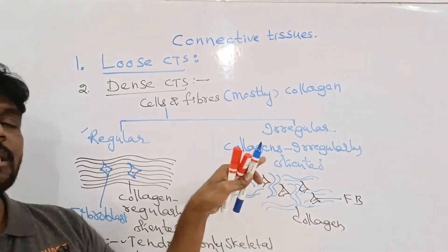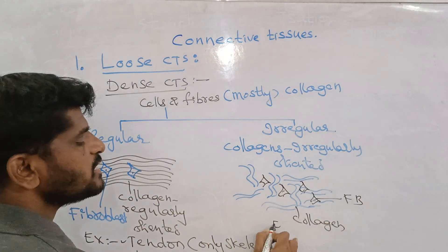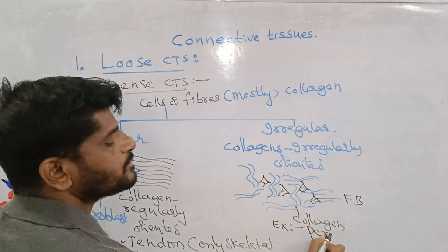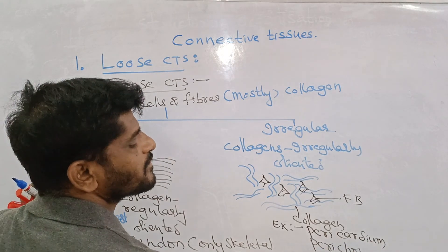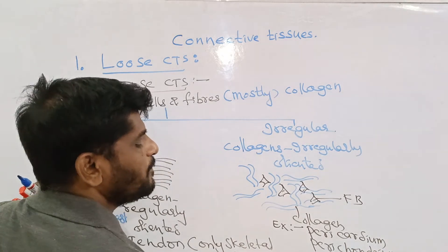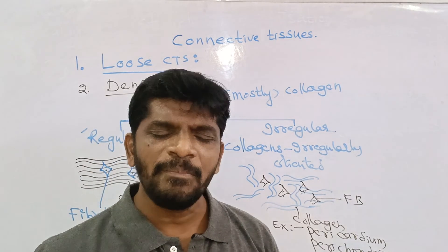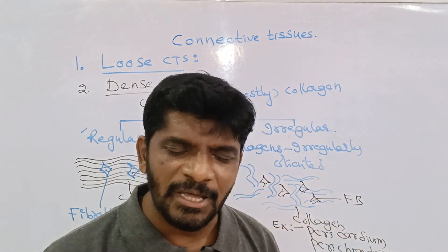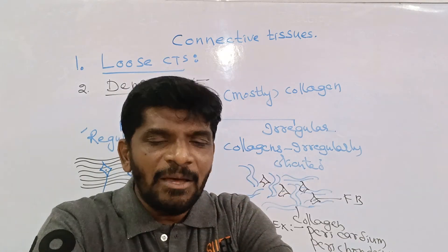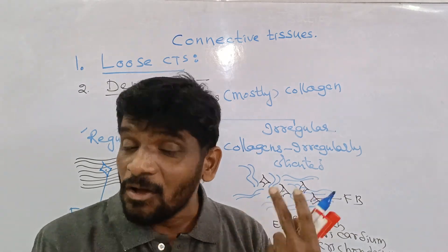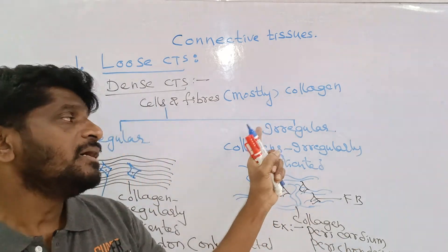Dense irregular connective tissue has collagen fibers that are irregularly oriented. Examples of dense irregular connective tissue include the pericardium, perichondrium, periosteum, endosteum, deeper region of dermis, and articular capsule — all lined by dense irregular connective tissue where collagen fibers are irregularly arranged and fibroblasts are present.